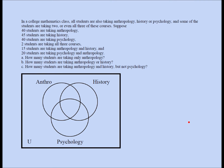An important concept in Venn diagrams is the word 'only.' If I say five people took only anthropology, five goes in just that region. But if I say five people took anthropology, then the sum of those four regions in the anthropology circle should be five. Similarly, if 20 people took only history, 20 goes in that one region; if 20 took history, those four regions add up to 20. In this question, you will feel like you don't have enough data, but actually you do have plenty of info to answer the questions asked — so it's solvable.